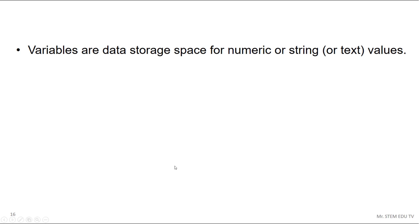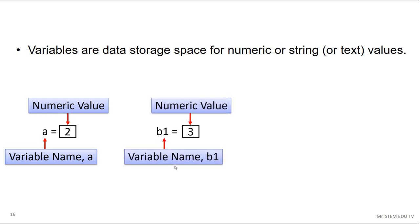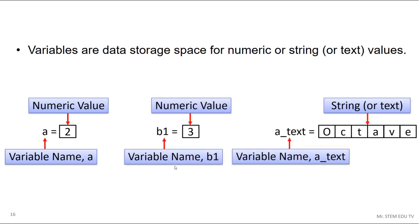Variables are data storage spaces for numeric or string values — the string being basically text. The main benefit of using variables instead of directly using data is that we can reuse them by calling the variable names when needed. Variable names are typically English alphabet A to Z, either lowercase or uppercase, or combinations of English alphabet, numeric numbers, and underscore.